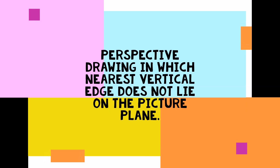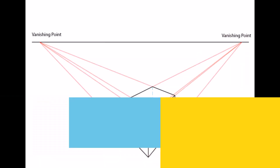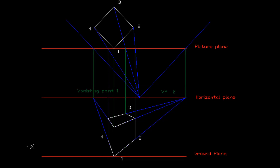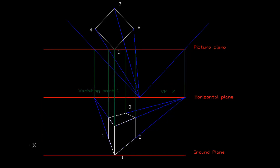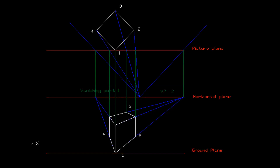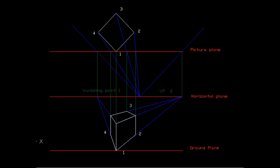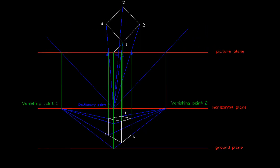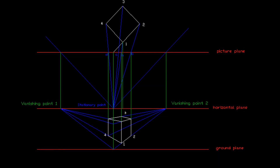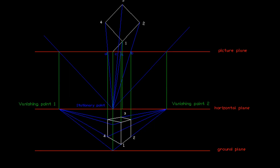Hey guys! In the previous tutorial we basically talked about the perspective drawing in which the nearest vertical edge lied on the picture plane. Now, let us take the following example in which the nearest vertical edge does not lie on the picture plane. In this case, the cube of side 25mm lies with its base on the ground and nearest vertical edge lying 10mm above the picture plane.